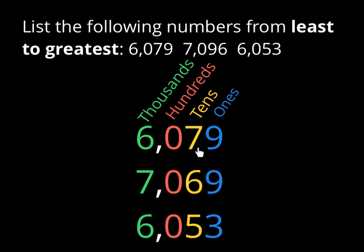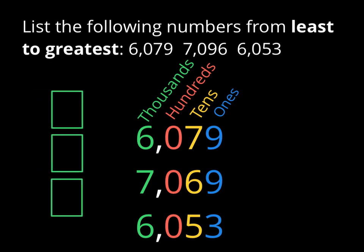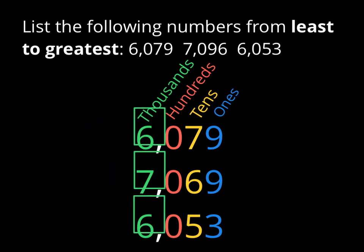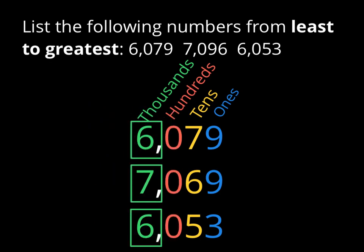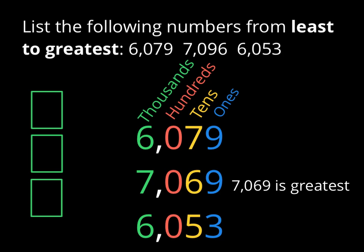Now that we've got them all lined up, it's really easy to see — using the same method — which one is going to be the least, which one's going to be the greatest, and which one fits in the middle. Let's grab these boxes again and start by comparing the numbers in the thousands column. Already I can see that the middle number, the seven, is greater than the two sixes. So we can easily see that 7,096 is greater than these other two numbers. We're not going to care about what's in the hundreds, tens, or ones column, because we already know the digit in the thousands place is bigger than the other two digits.